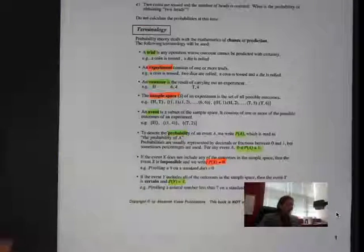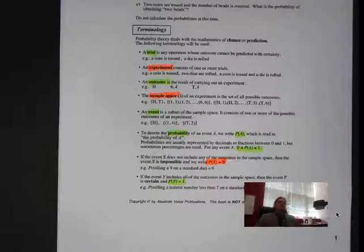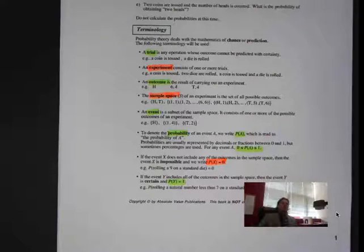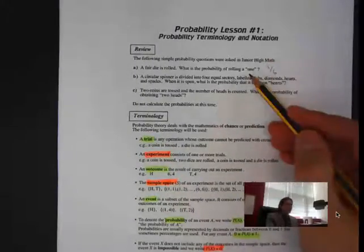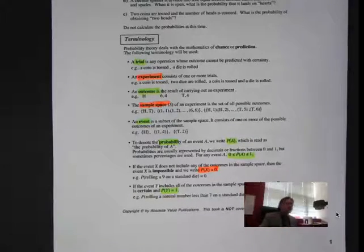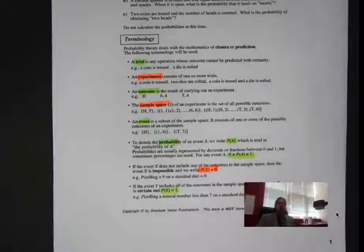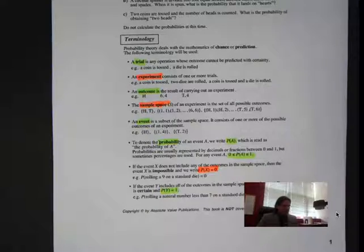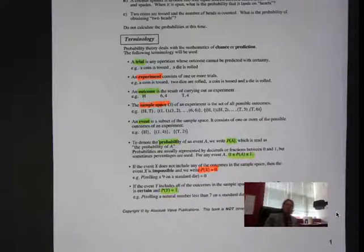First of all, a trial. A trial is one event — one thing. So if I roll a die once and I want a one, and I roll a three, that's my trial. Rolling it once is a trial. An experiment is having more than one trial. Normally if you want to see if something works, you do more than one trial. So if I roll a die five times to see if I get a one, that would be an experiment.